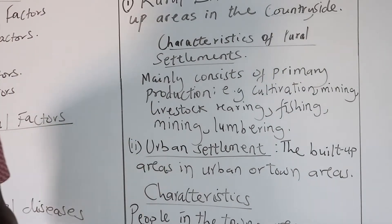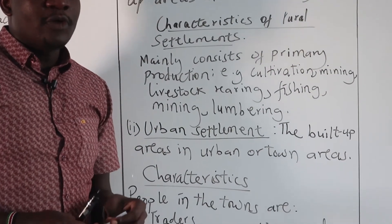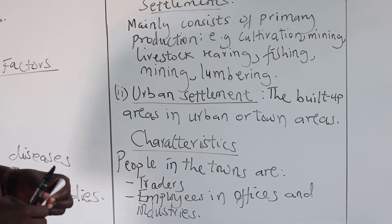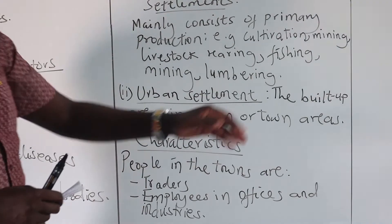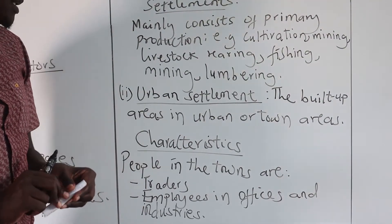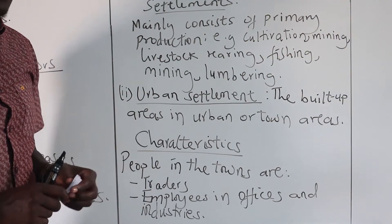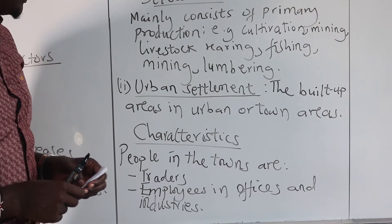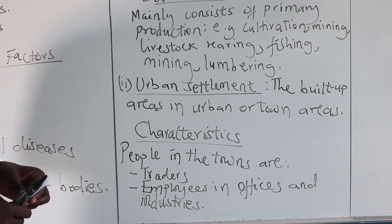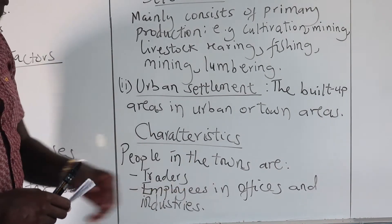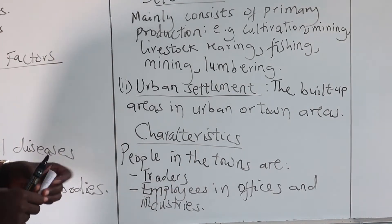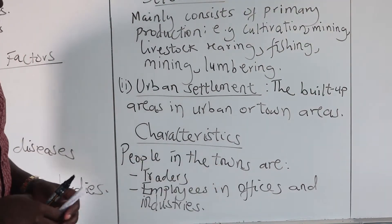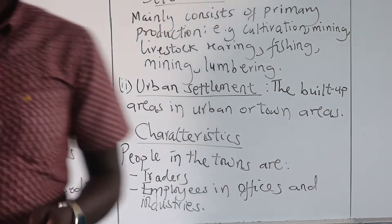The second type is the urban settlement. These are the built-up environment in the urban or town areas — basically the congested places, which earn them the name urban areas. Most of the activities in the urban areas, as we have listed here, include trading, and there are also employees in various offices and industries in the town.